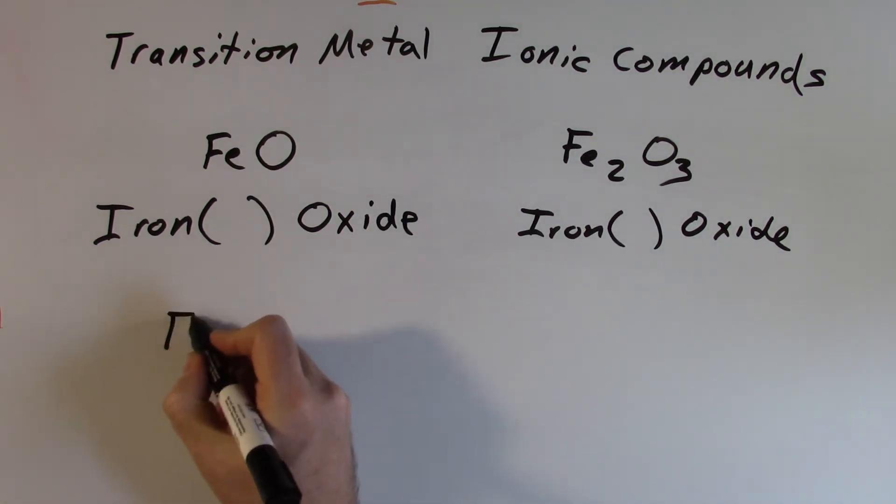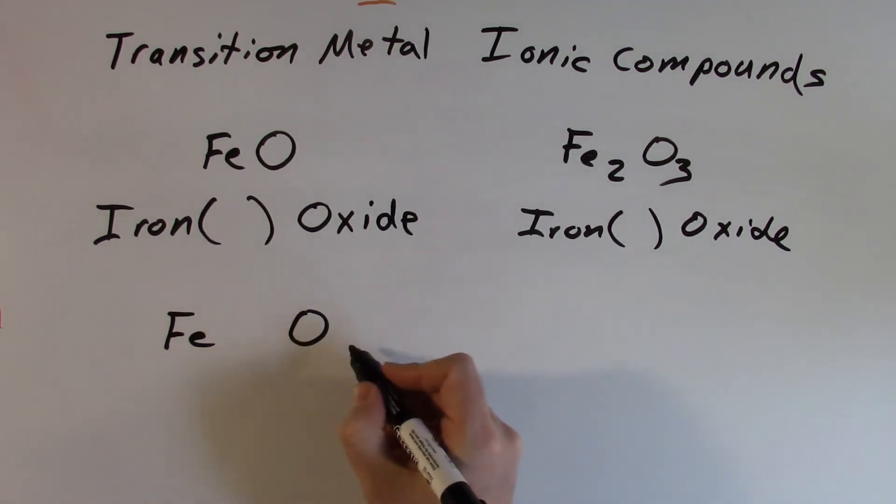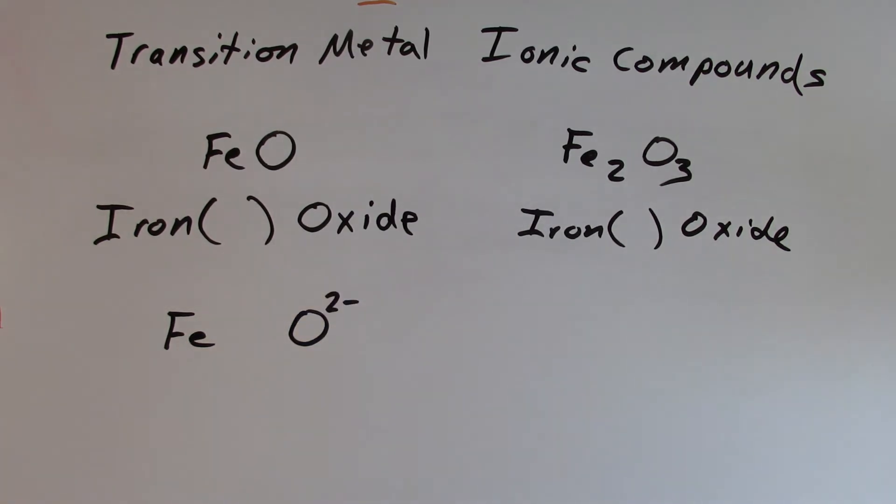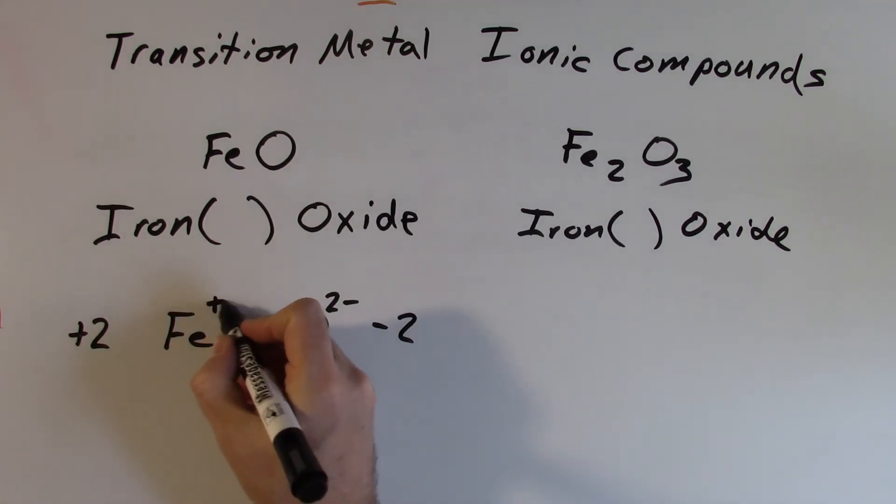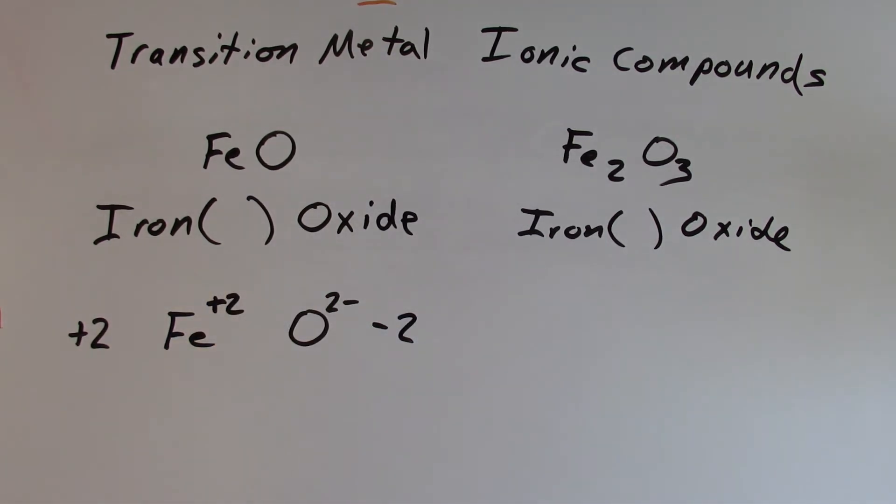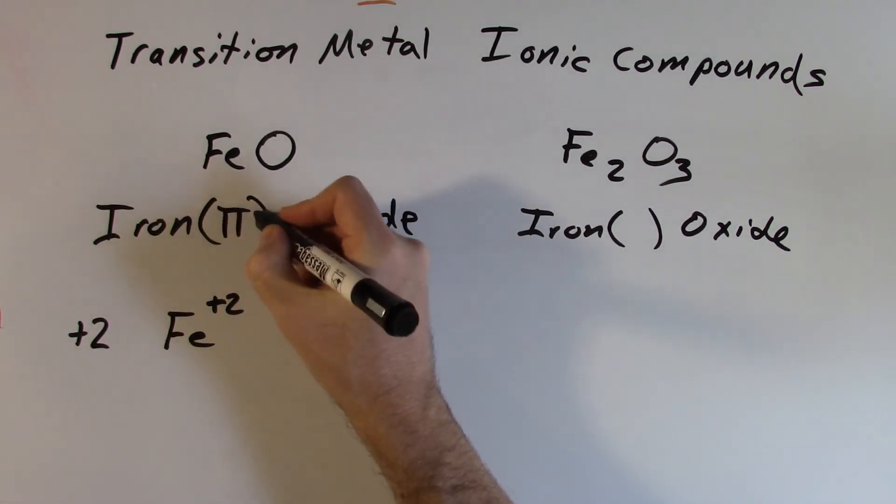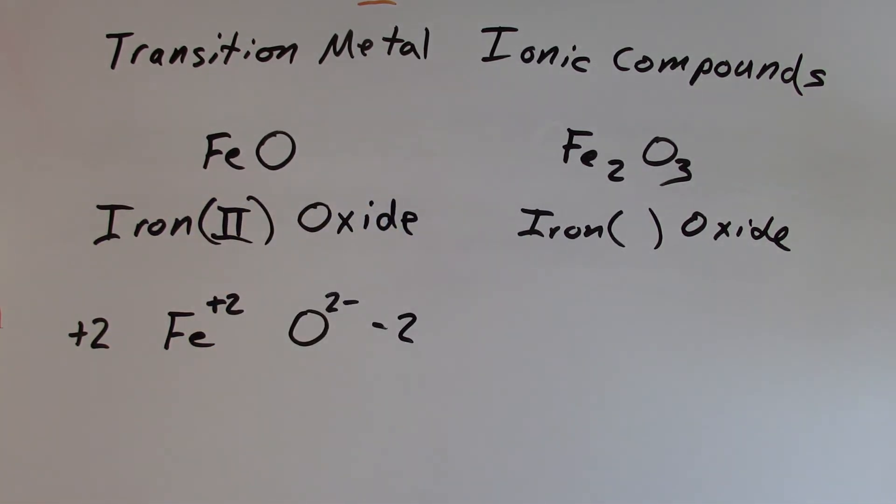So I've got one iron and one oxygen, and we know the oxygen has a negative 2 charge associated with that. And we also know that the positive and negative charges have to equal out. So if I have a total of negative 2 from that one oxygen, I have to get a total of plus 2 from all the iron atoms that I have. Well, I only have one iron atom here. So that one iron has to give me that plus 2 charge. So this is iron with a plus 2 charge. Then my name is going to be iron 2 oxide.